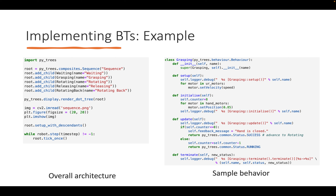To implement behavior trees you can use a class you create yourself, or you can use a library. In this case I have the py_trees library, where you can see how the tree is composed by adding children to nodes like the sequence node. You have the opportunity to render the tree and get a graphical representation. You then implement behaviors by overriding certain methods of a class — py_trees has methods like setup, initialize, update, and terminate that are called at different stages in the lifecycle of a behavior tree.